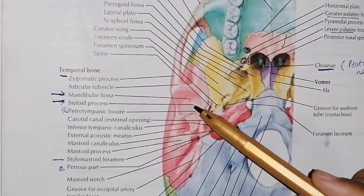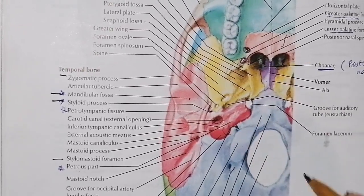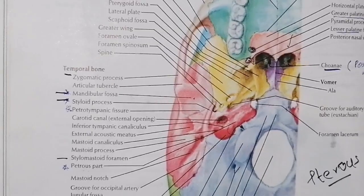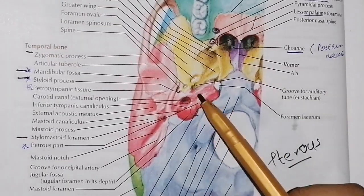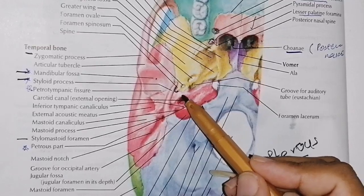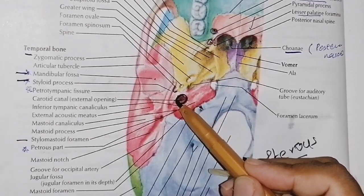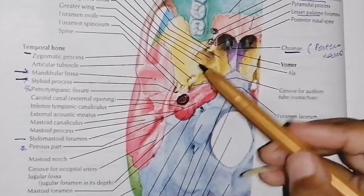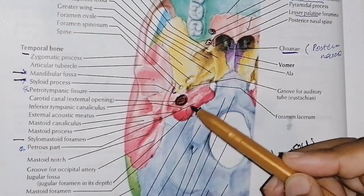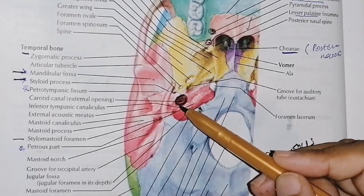The temporal bone has a squamous portion and a petrous portion. The petrous part of the temporal bone contains the carotid canal. The carotid canal transmits the internal carotid artery and the carotid plexus.